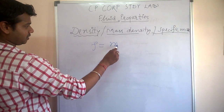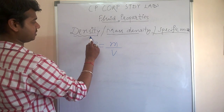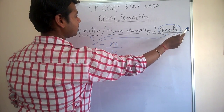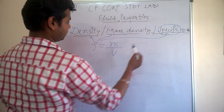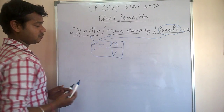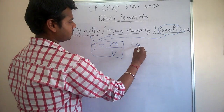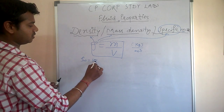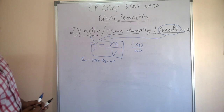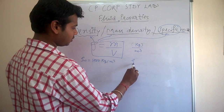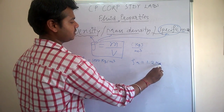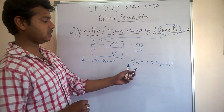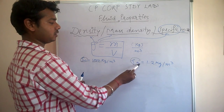Density equals mass divided by volume. Remember it is called mass density or specific mass. Wherever the word 'specific' comes before any term, that quantity is divided by volume. The unit is kg per meter cube. The density of water is 1000 kg per meter cube — remember this value. The density of air can be taken as 1.2 kg per meter cube. In IES, if not given, use these standard values.